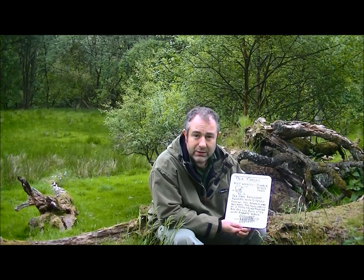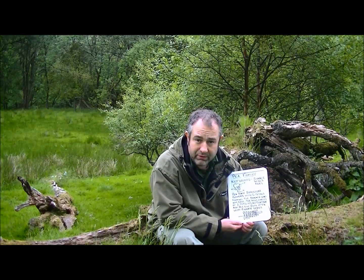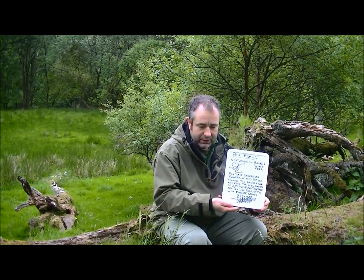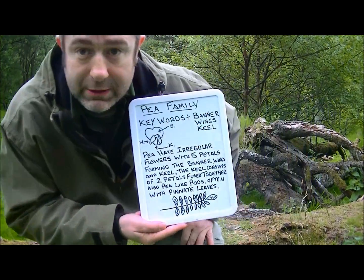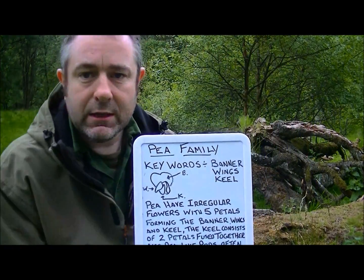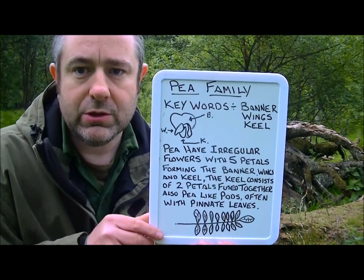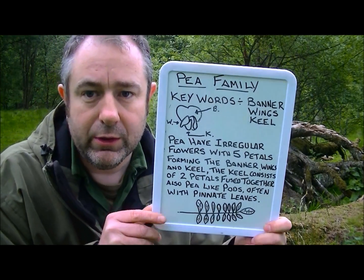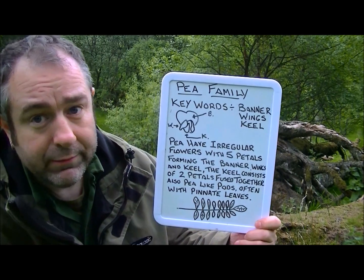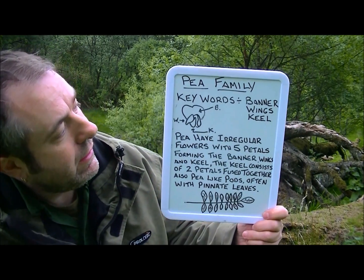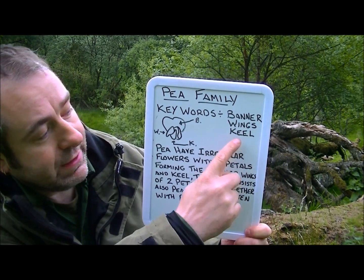So, how do we recognise members of the pea family? We're just going to be using keywords. Pea family — the keywords are banner, wings, and a keel.